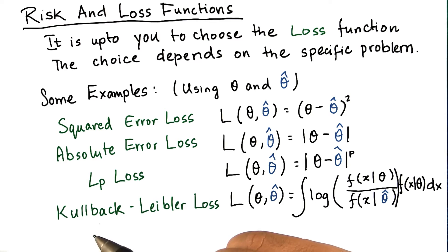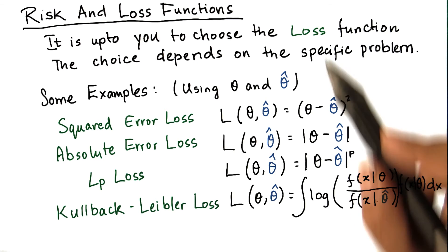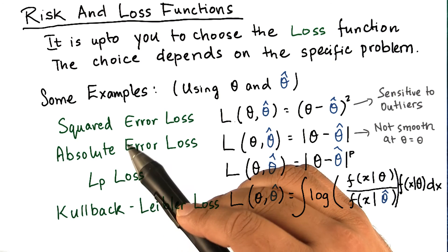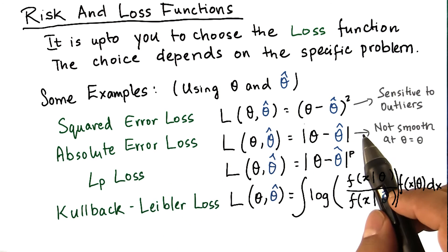Another very interesting quantity is the Kullback-Leibler loss. It's a complicated formula, and it's an information theoretic loss calculated for two different distributions. You will often encounter square error loss in statistical learning.